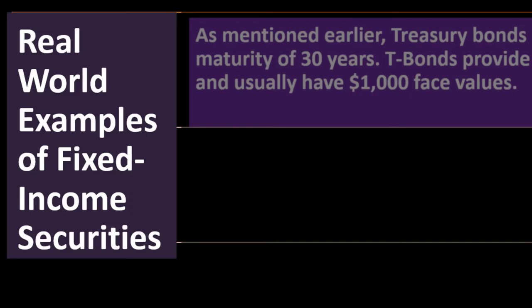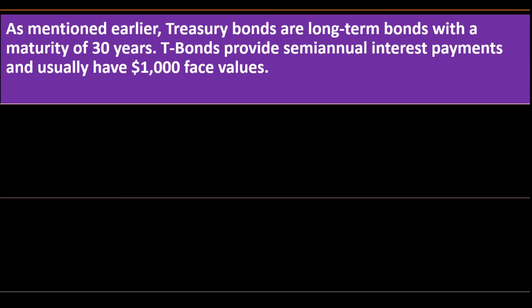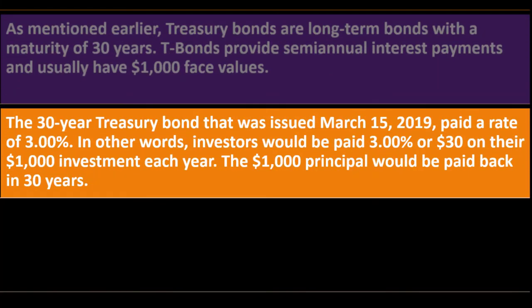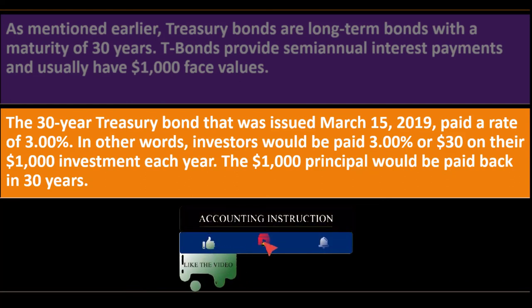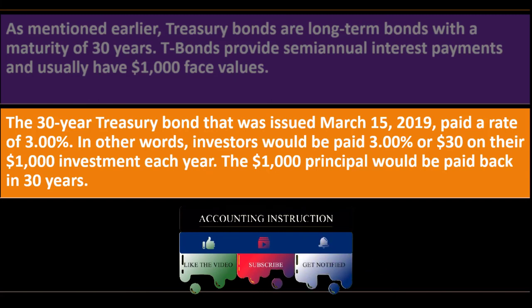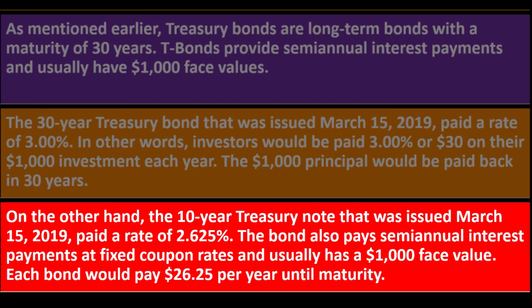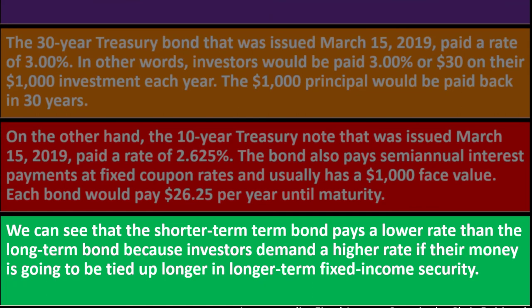Real-world example: Treasury bonds are long-term bonds with a maturity of 30 years. The 30-year Treasury bond issued March 15, 2019, paid a rate of 3% — investors would receive $30 on their $1,000 investment each year, with the $1,000 principal repaid in 30 years. The 10-year Treasury note issued the same date paid 2.625%, with each bond paying $26.25 per year until maturity. The shorter-term bond pays a lower rate than the long-term bond because investors demand a higher rate when their money is tied up for longer.